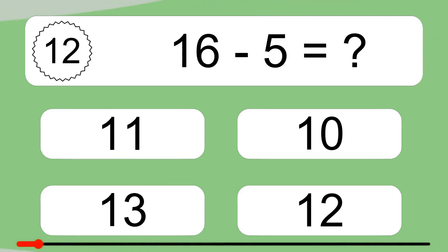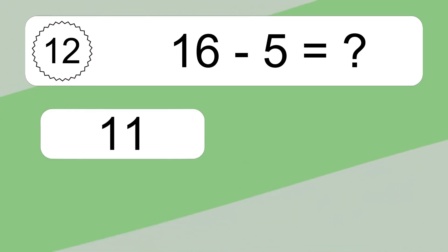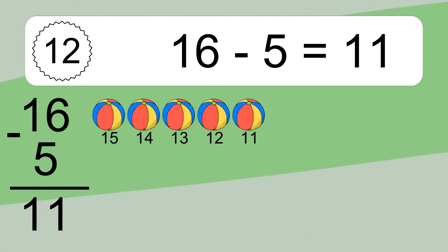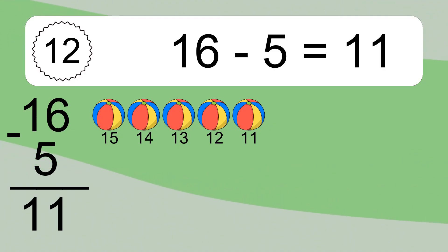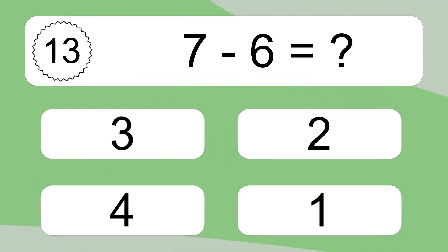16 minus 5 equals 11. Let's count it: 15, 14, 13, 12, 11. 7 minus 6 equals what?